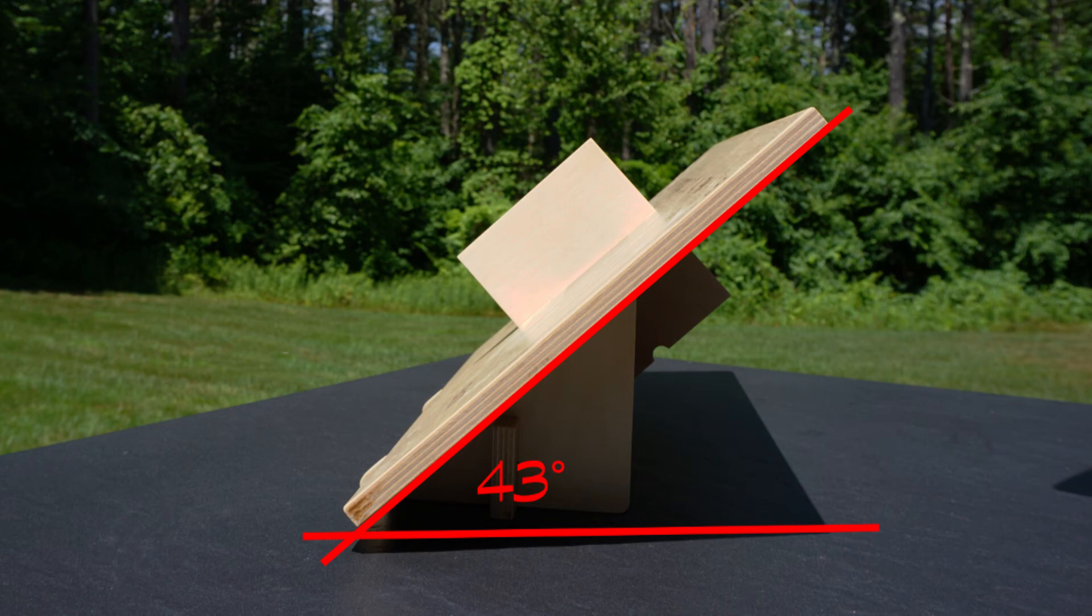Positioning the dial equal to our latitude is the first of two steps needed to obtain accurate readings of solar time. The second step is to make sure that the dial is aligned with our meridian, that is, geographic north, not magnetic north.